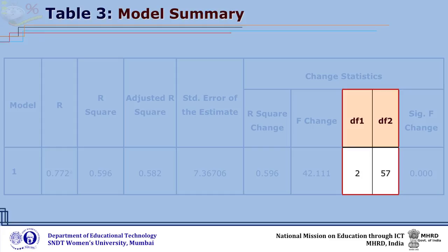It indicates that both self-confidence and intelligence contributed jointly in predicting achievement, and this joint contribution is significant. In this context, the null hypothesis that there is no significant joint contribution of self-confidence and intelligence in predicting achievement of students is rejected. Further, the percentage of joint contribution of self-confidence and intelligence in predicting achievement is 59.6%, which is moderate. Therefore, it can be said that both self-confidence and intelligence can be said to be the predictors of achievement of students.